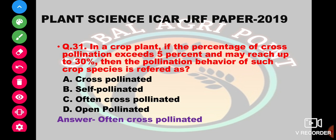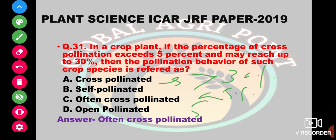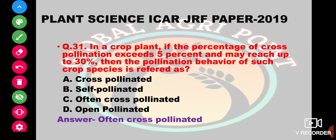In a crop plant, if the percentage of cross pollination exceeds 5 percent or may reach up to 30 percent, the pollination behavior is referred to as: cross-pollinated species have more than 30 percent, self-pollinated less than 5 percent, often cross-pollinated between 5 to 30 percent, and open-pollinated more than 80 percent. The answer is often cross-pollinated.